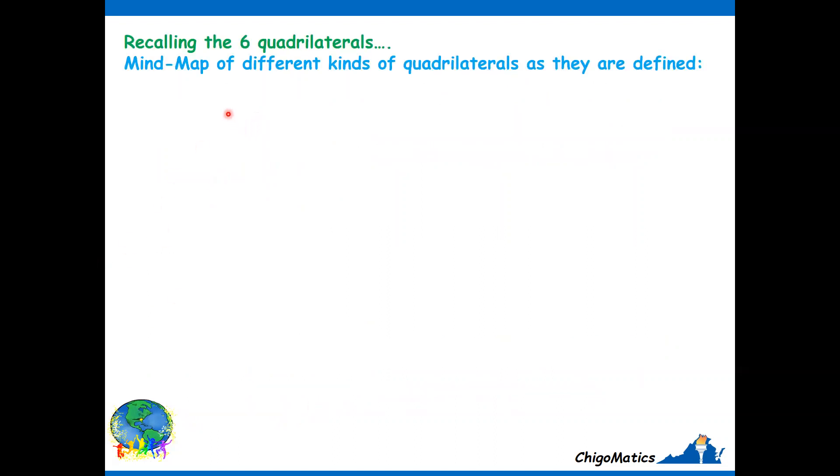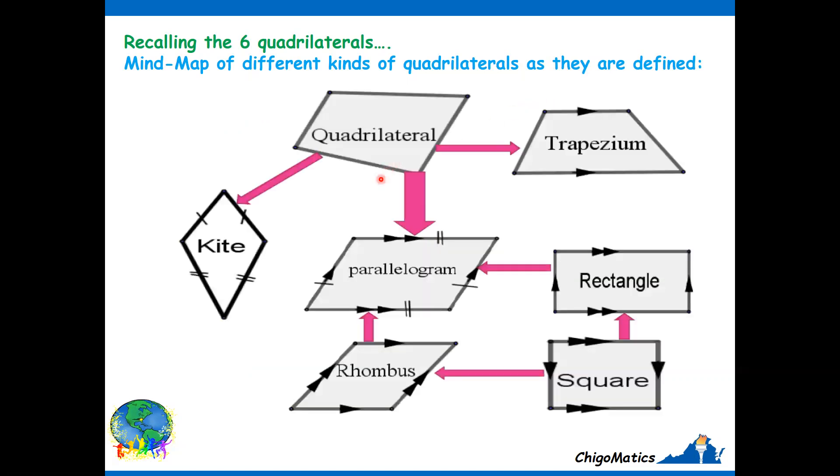Now, let us look at the mind map of different kinds of quadrilaterals as they are defined. This is quadrilaterals - four sides, four angles. So, in quadrilaterals, we have trapezium. Then we have the kites, we have the parallelogram. Then, the arrows make sense here.